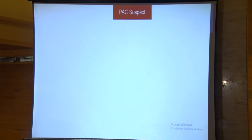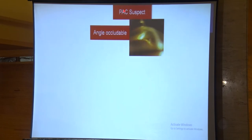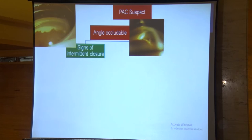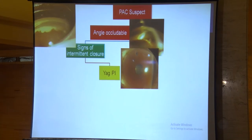Another very important condition we frequently encounter is the primary angle closure suspect. What is suspicious here is the gonioscopic examination showing an occludable angle — we are unable to see the trabecular meshwork. Not all occludable angles need treatment. If there are signs of intermittent closure — such as peripheral anterior synechiae, patchy pigmentation on gonioscopy, or pupillary ruff atrophy — these indicate subclinical angle closure, and we should proceed with YAG iridotomy in such patients.